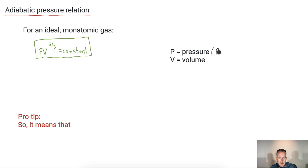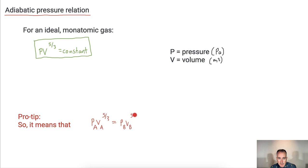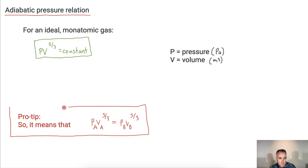Remember, pressure is in pascals and volume is in meters cubed. This means that if I know a certain state — say pressure and volume at point A — then pressure at A times volume at A to the five-thirds equals pressure at B times volume at B to the five-thirds. So if I know the pressure and volume at one point, I can find them at another — this is a really useful pro tip for solving problems.